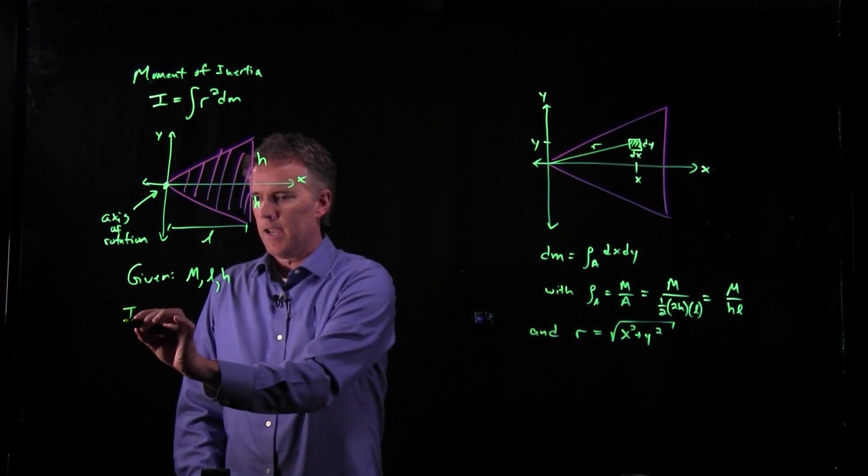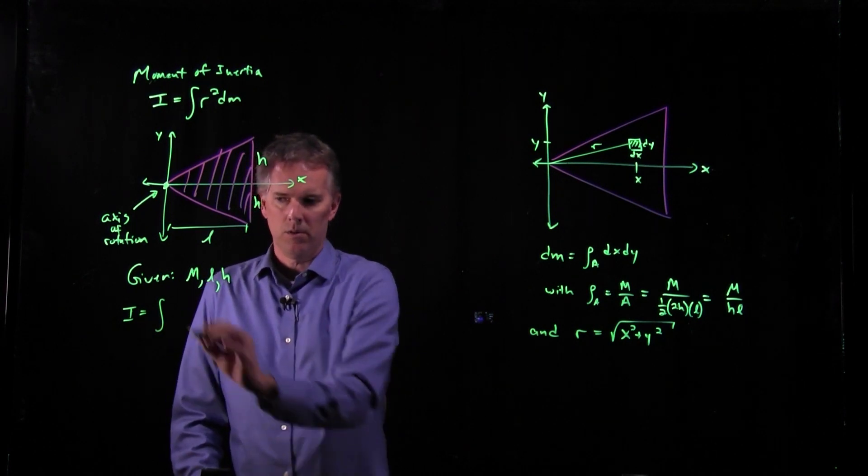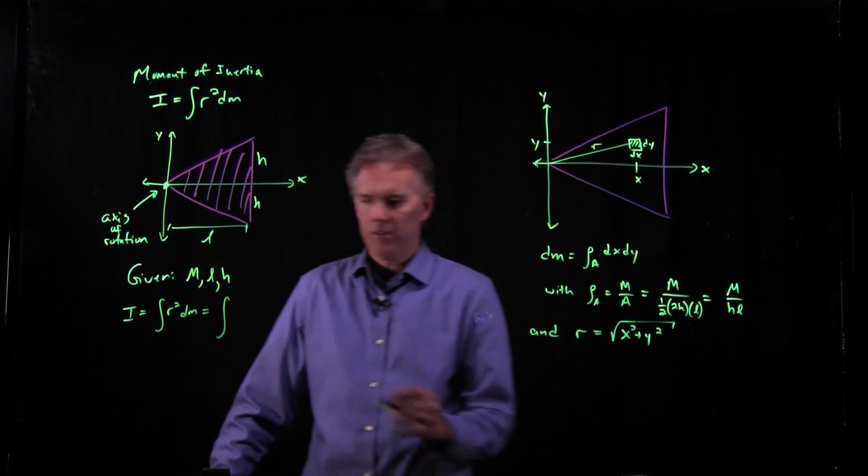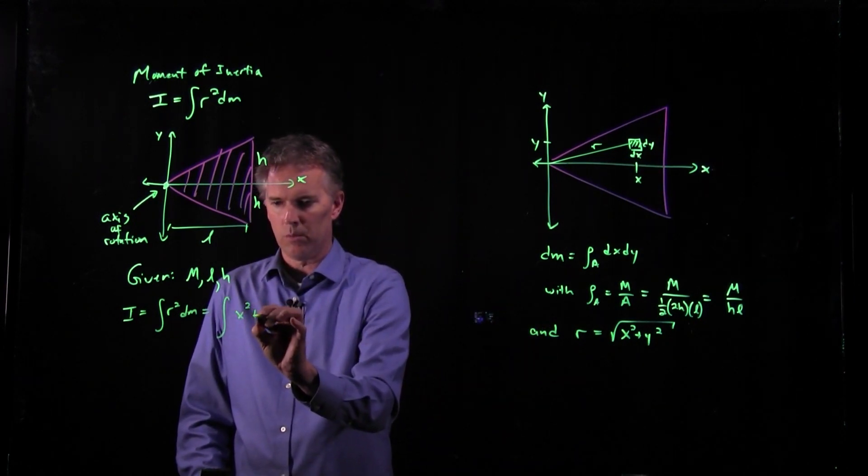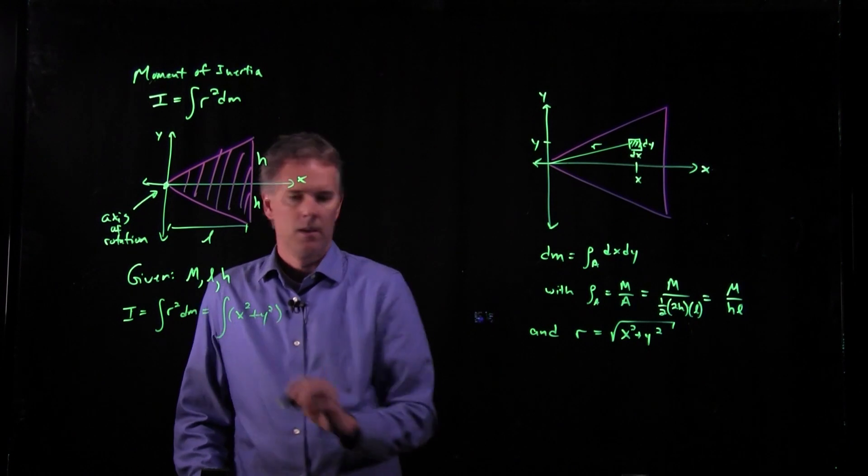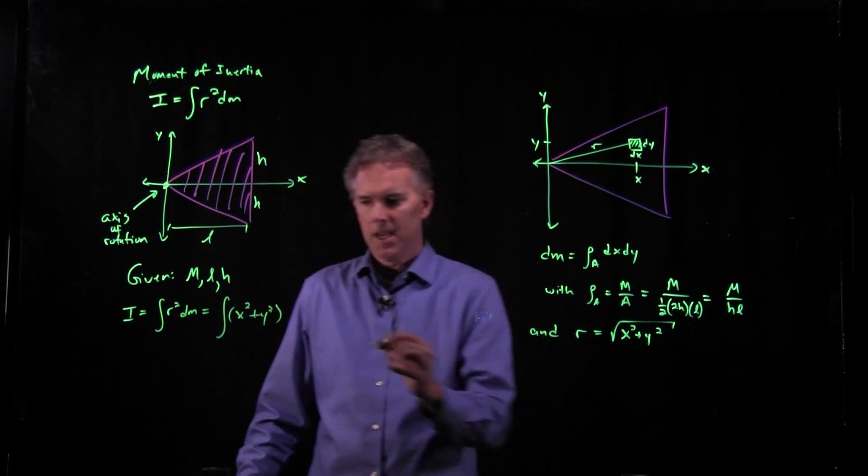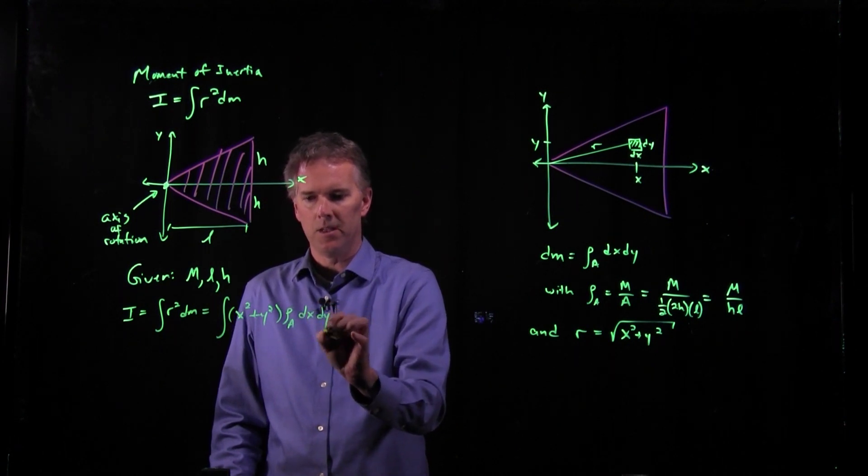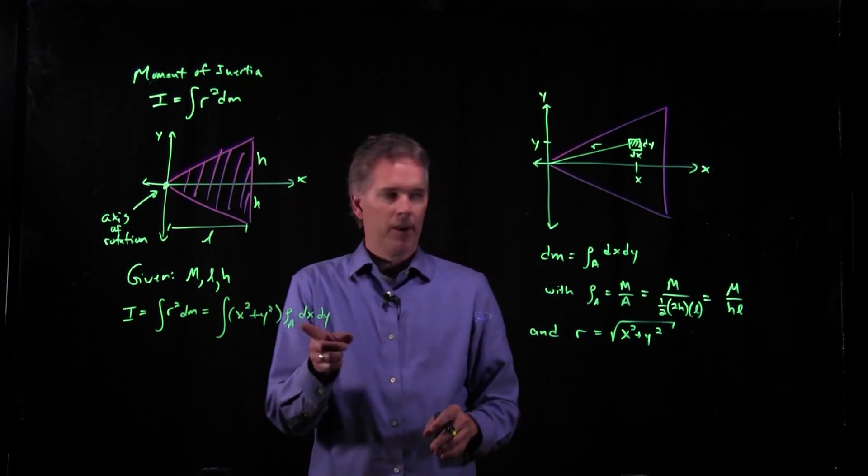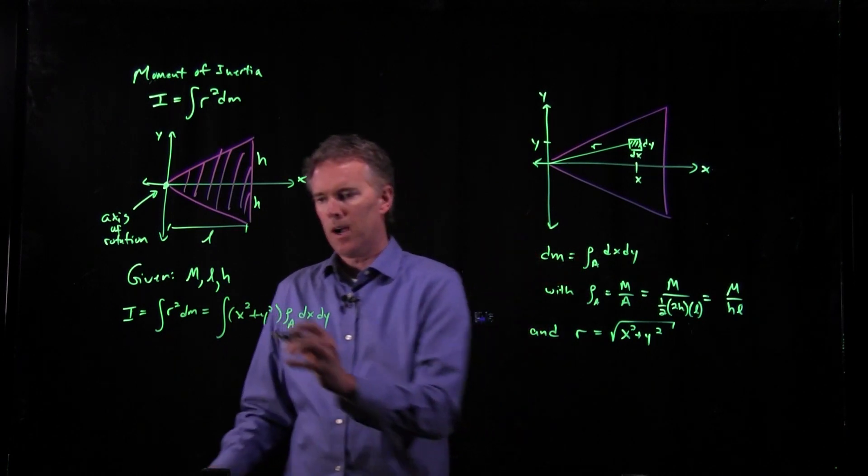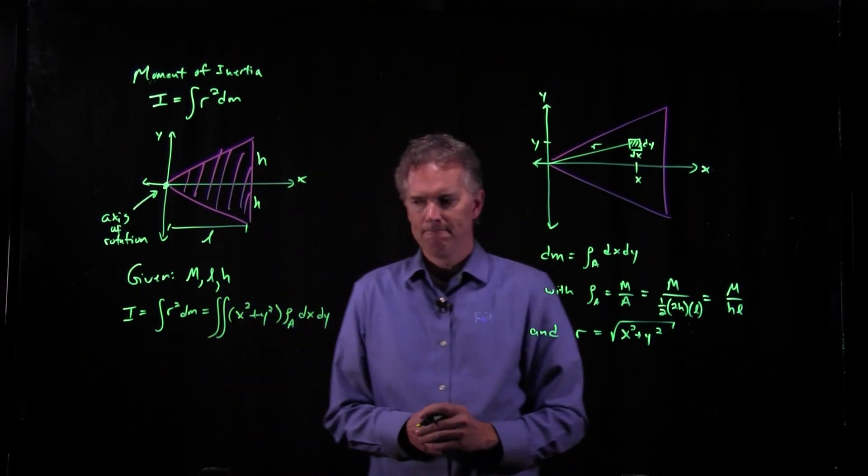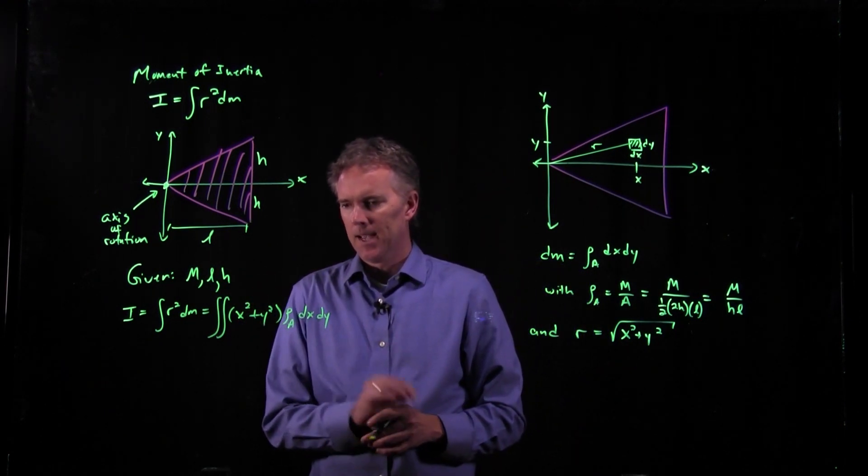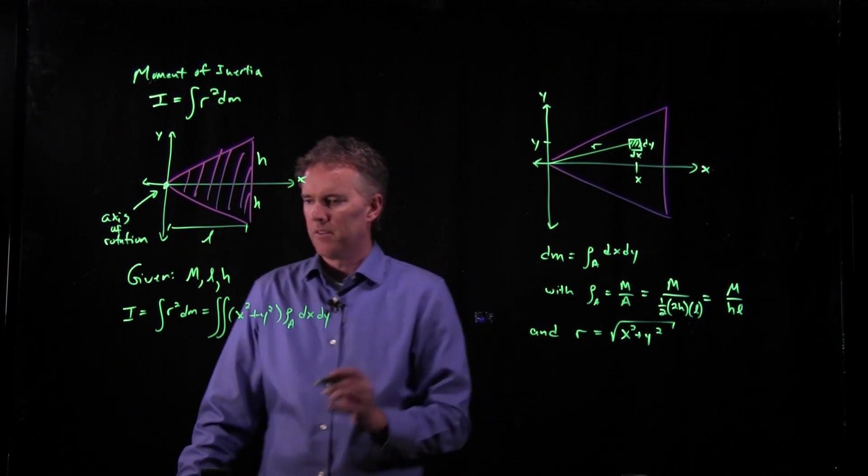So let's write this out. We've got I equals the integral of r² dm, which we said was the integral of this thing, x² plus y². And then we have dm, which is rho_a times dx dy. And now you notice that you've got to integrate over x and you have to integrate over y. So we'll put a double integral right in front of there. And now we need to sort out what this stuff is going to be.